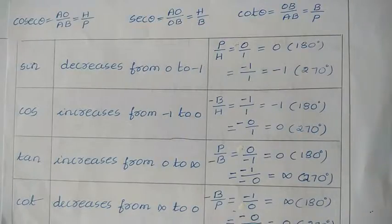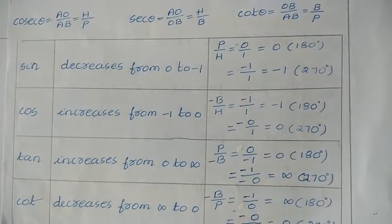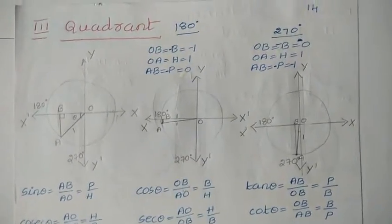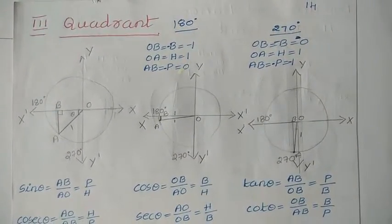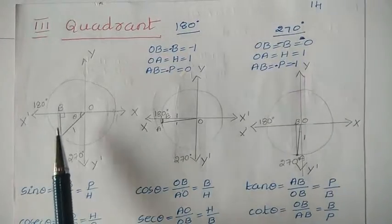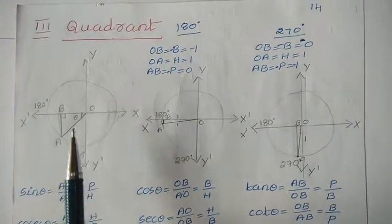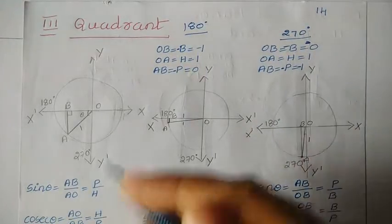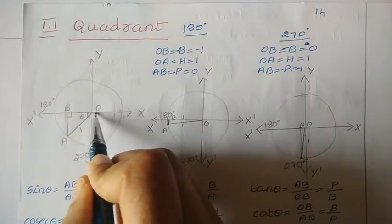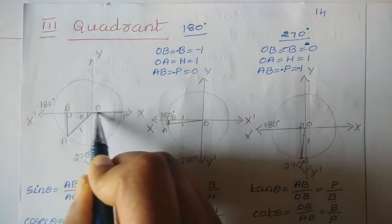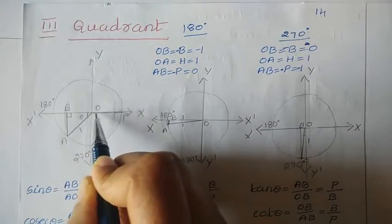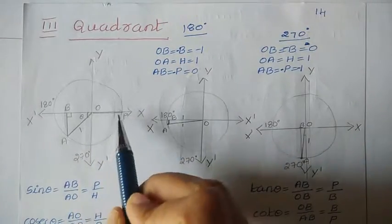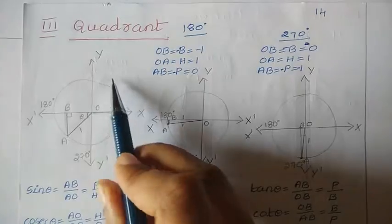We can get these values, so now let us see how these values are obtained. Consider a Cartesian plane. Let us divide the Cartesian plane into two coordinate axes, x-axis and y-axis. Now on this Cartesian plane, consider a unit circle. Unit circle means the radius of the circle is one unit. Now here consider a point OP — a fixed line ray on the circle, and let us say that this particular ray OP is moving on the circle.